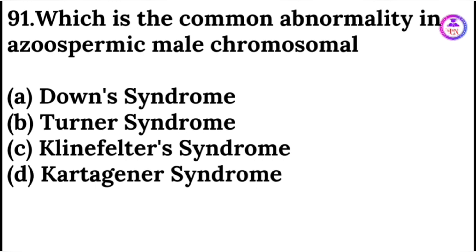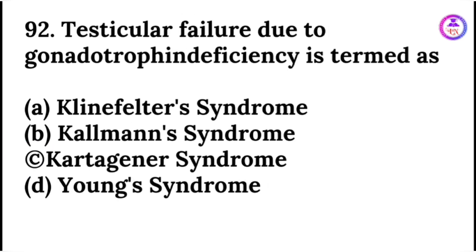Which is the commonest chromosomal abnormality in azoospermic males? The answer is Klinefelter syndrome. Testicular failure due to gonadotrophin deficiency is termed as Kallmann syndrome.